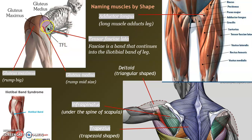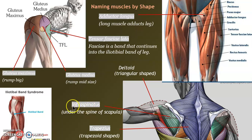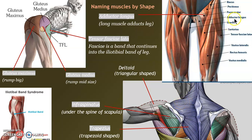Gluteus means rump — we have a big rump muscle and a mid-sized rump muscle. Fascia means band; we have the tensor fascia lata, or TFL, which works together with the IT band — iliotibial band — to abduct. Alexa was using this muscle. It sometimes causes pain at the lateral aspect of the knee. Infraspinatus is under the spine of the scapula. The trapezius is trapezoid-shaped.